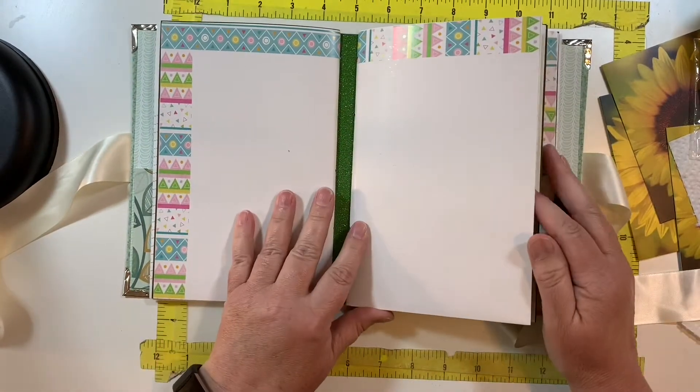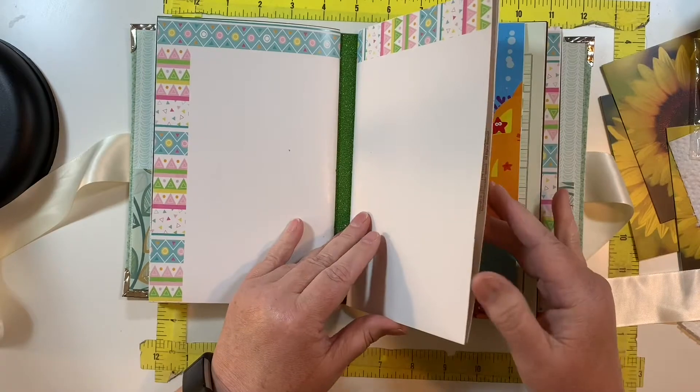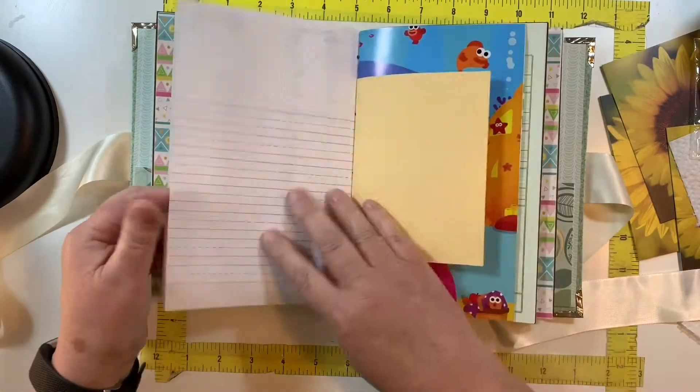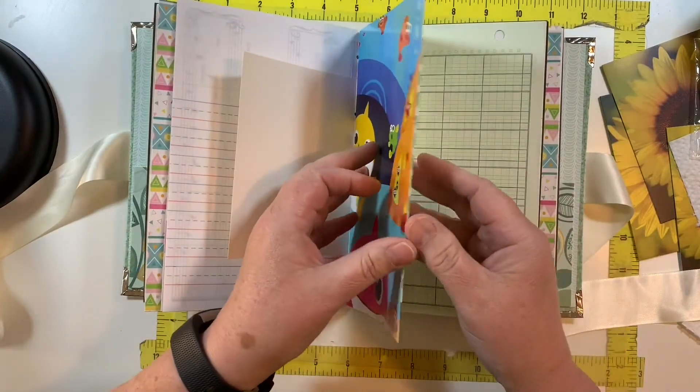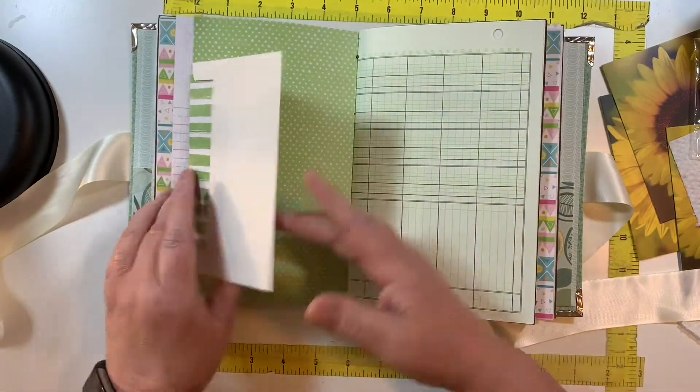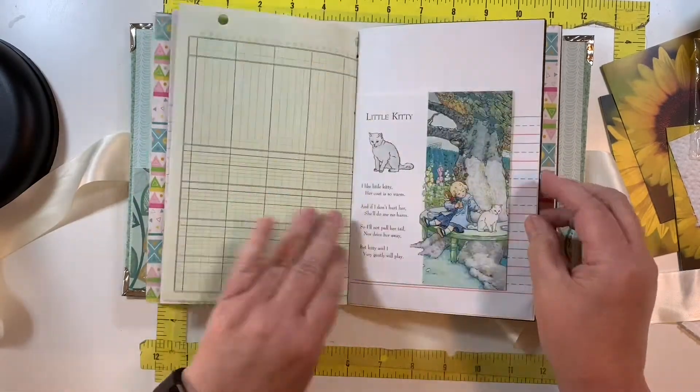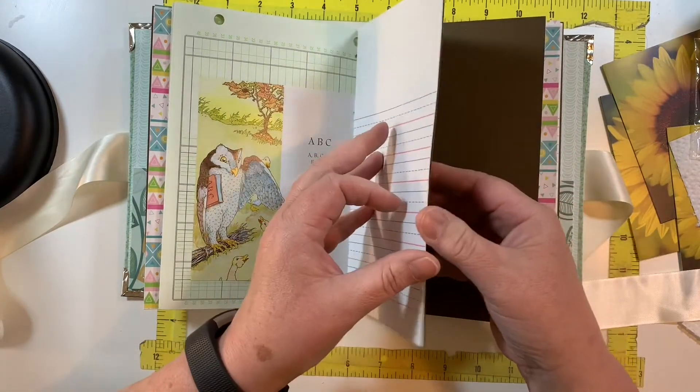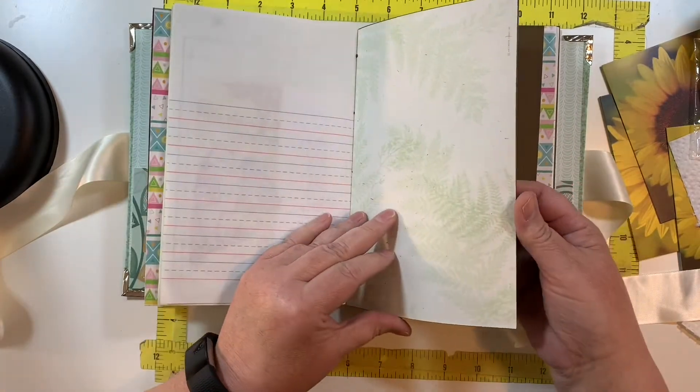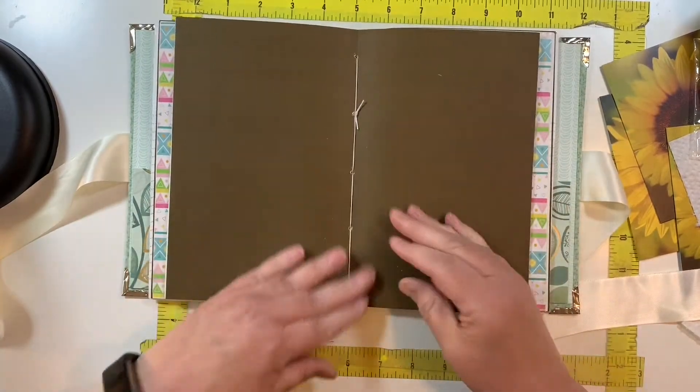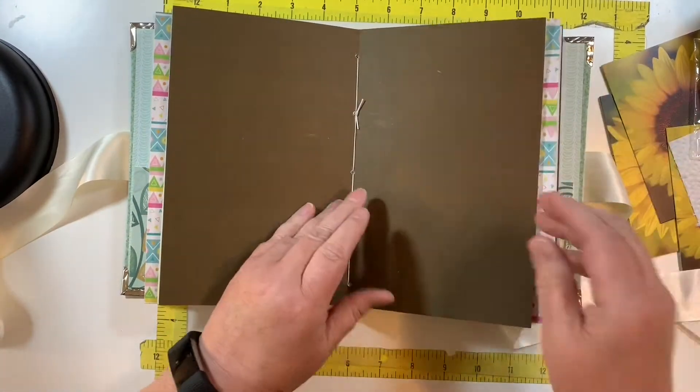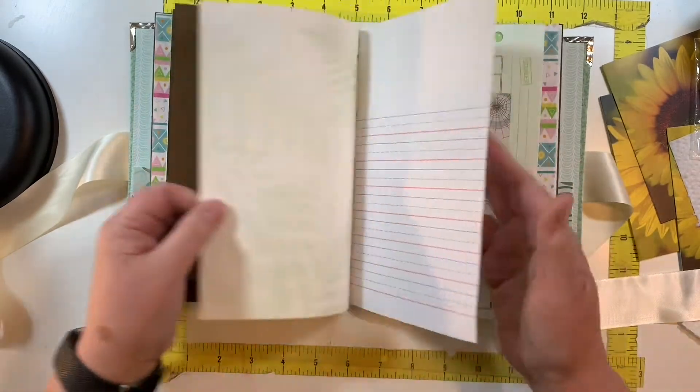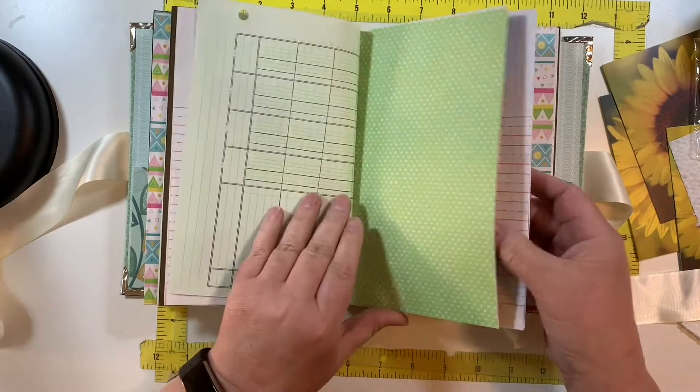And now we have the second signature. There's three signatures in this book. So, music paper, a lined sheet, another card, another Baby Shark. Here's this envelope, another Mother Goose book page, paper, the center of this signature. And I know what I'm going to be doing with these brown sheets, and I will share that with you when I'm done.